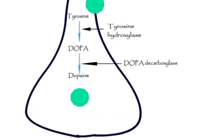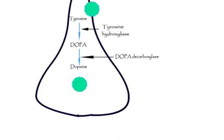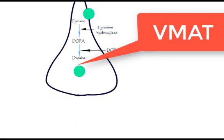The further conversion takes place in vesicles. So the dopamine is transported into the vesicle by the vesicular monoamine transporter VMAT.